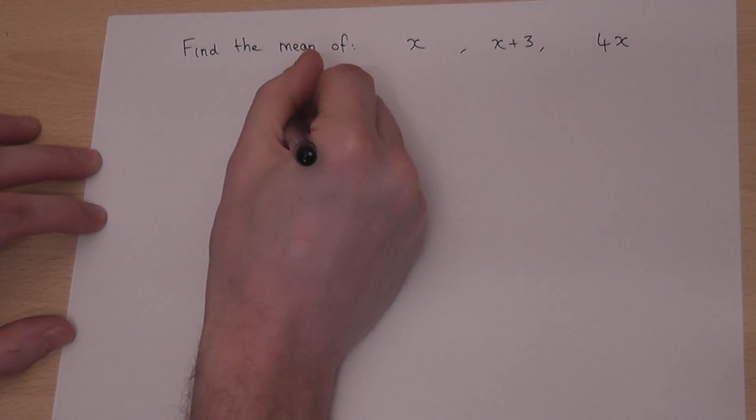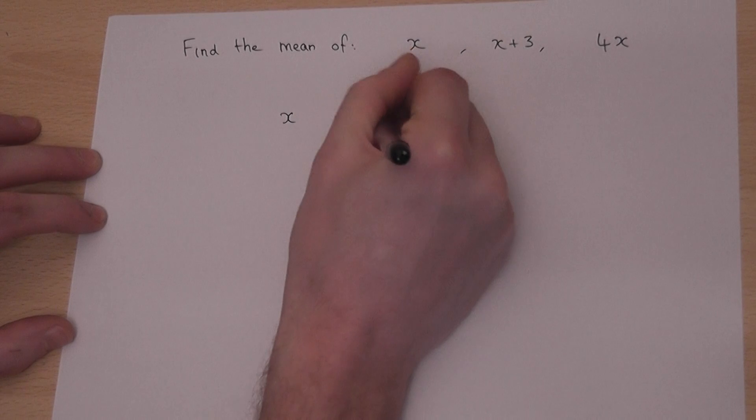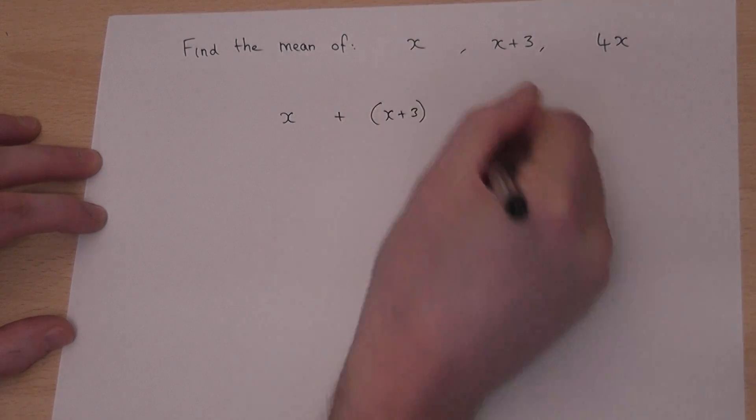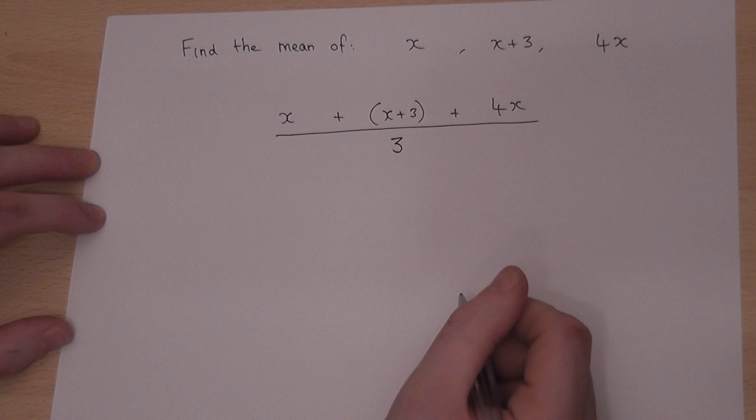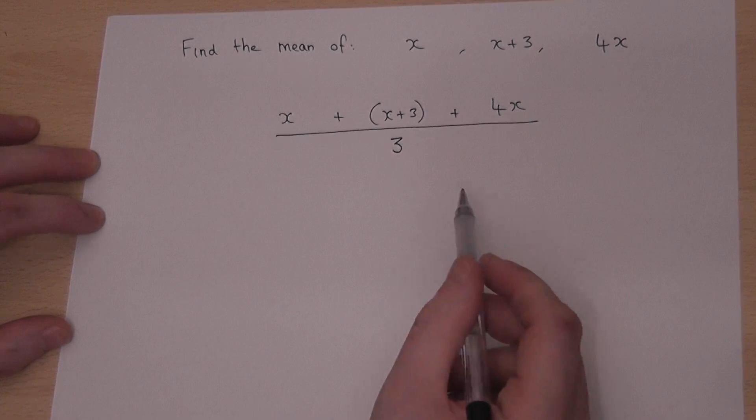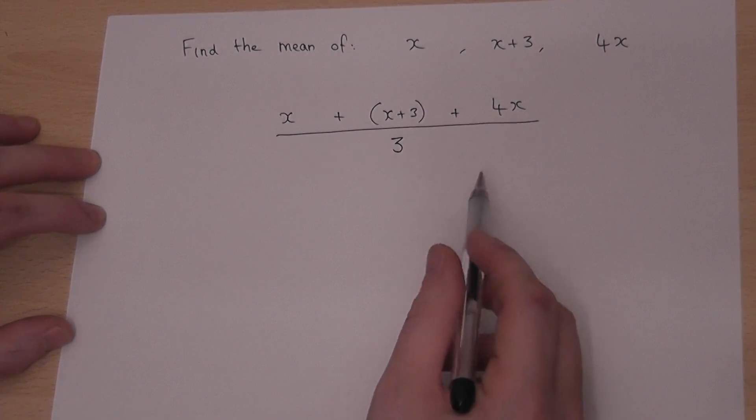Now in this case we have an x, we have an x plus 3, and we have a 4x. So I have to divide by 1, 2 and 3, divide by 3. So I can begin by trying to simplify the top.